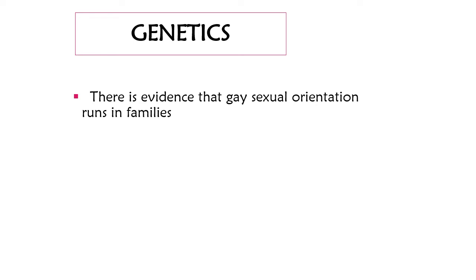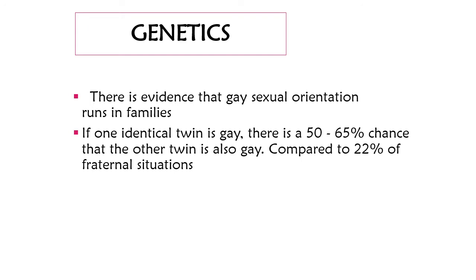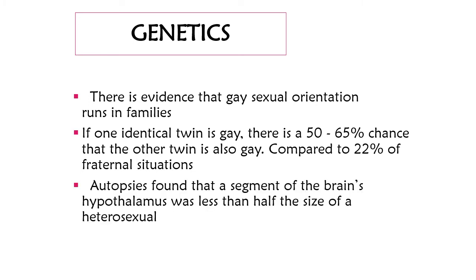Now let's look at the causes of sexual orientation — specifically genetics. There is evidence that sexual orientation runs in families. If one of an identical twin set is gay, there's between a 50 and 65% chance the other one is also gay, compared to 22% of fraternal twins. Autopsies have found that a segment of the brain's hypothalamus is less than half the size in a homosexual individual compared to a heterosexual individual — just one section, not the entire hypothalamus.